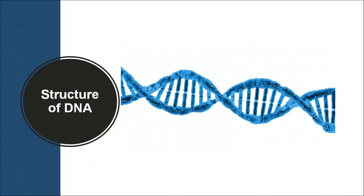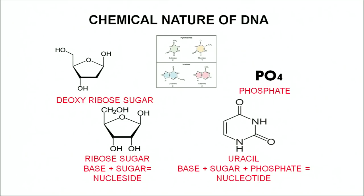We know that DNA is the genetic material. What is the structure of DNA? DNA is a double helical structure — two helices coiled around each other, just as two strings of a rope are coiled around each other. The two strands of DNA are coiled around each other and form two polynucleotide chains. DNA is made up of three compounds: sugar, bases, and phosphate. The sugar is deoxyribose — a pentose sugar, meaning it is a five-carbon sugar.